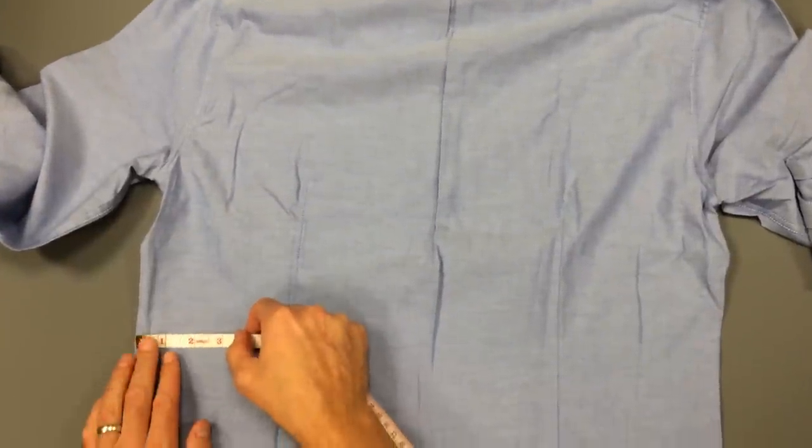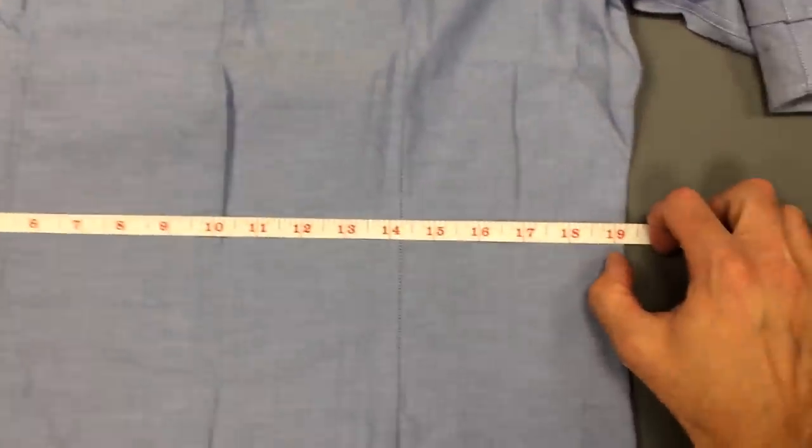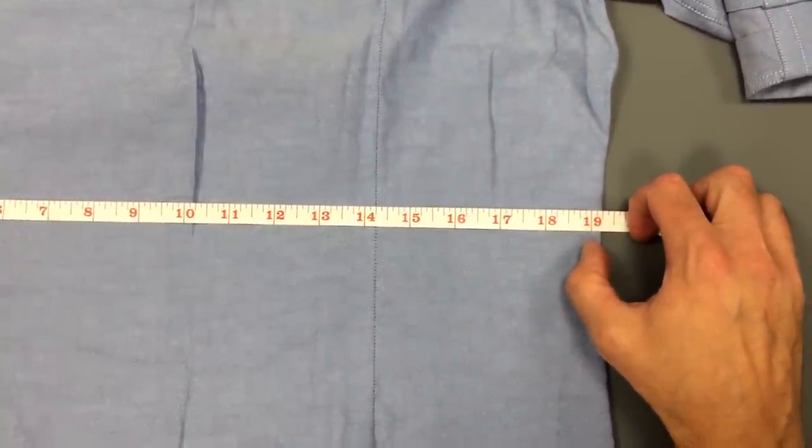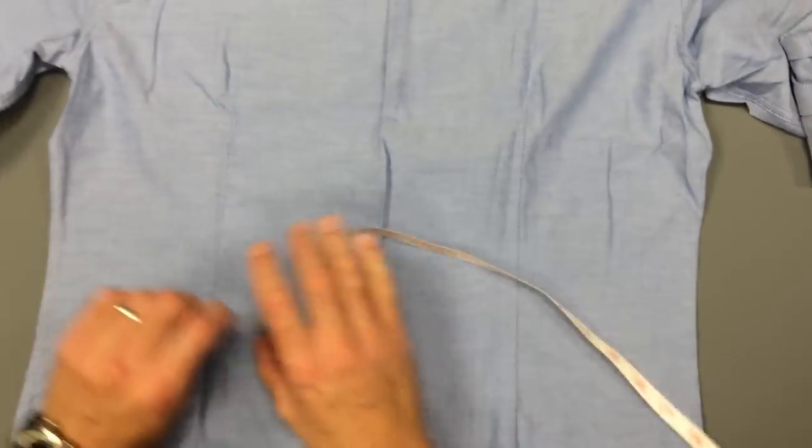The waist. This measurement is taken from the most trimmed part of the waist and then times by two. Here, nineteen and a quarter times two equals thirty-eight and a half.